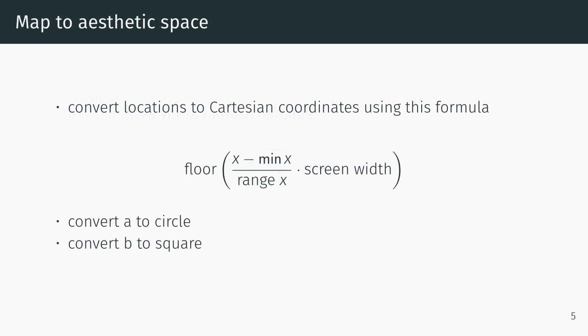We'll convert to Cartesian coordinates using this formula. We'll convert A to a circle and B to a square, then actually use the symbols circle and square.